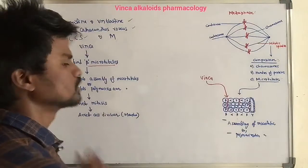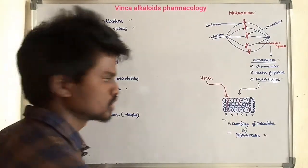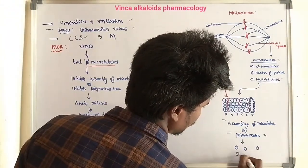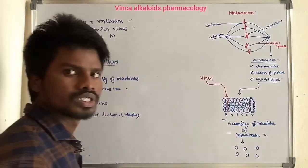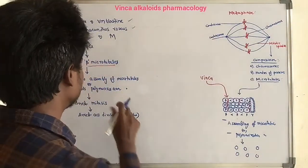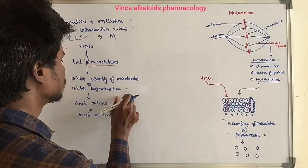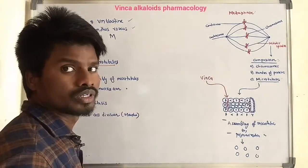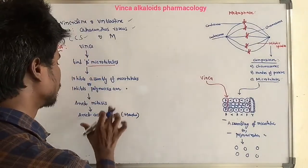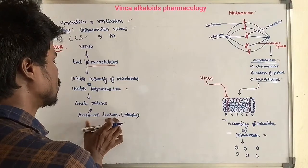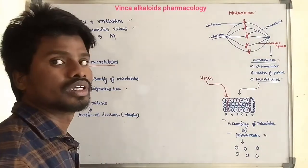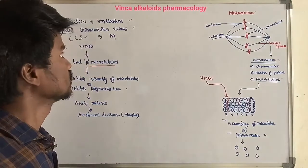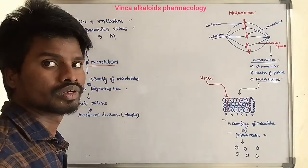Inhibition of polymerization results in individual cells being unable to form the spindle. This arrests mitosis, and ultimately arrests cell division at metaphase. This completes the mechanism of action of Vinca Alkaloids.